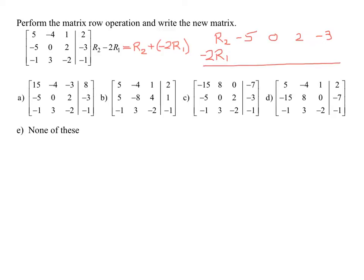So what is negative 2 times this whole row? I'm going to do negative 2 times 5 is negative 10. Then negative 2 times negative 4 is 8. Then negative 2 times 1 is negative 2. And lastly, negative 2 times 2 is negative 4.